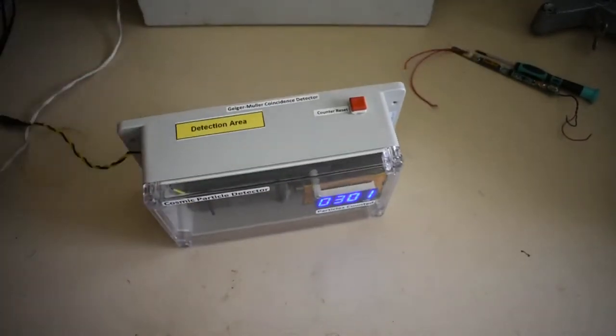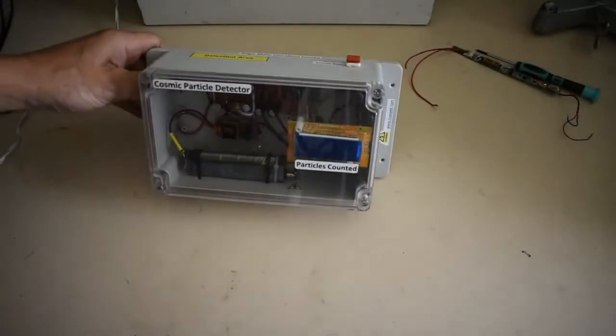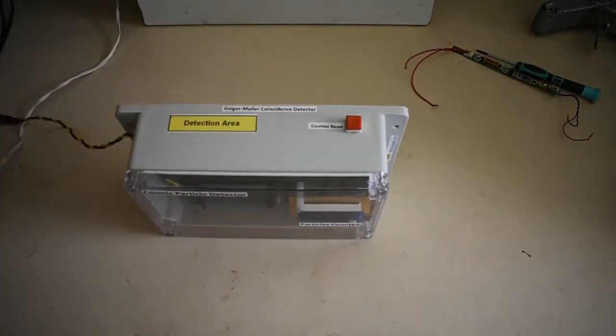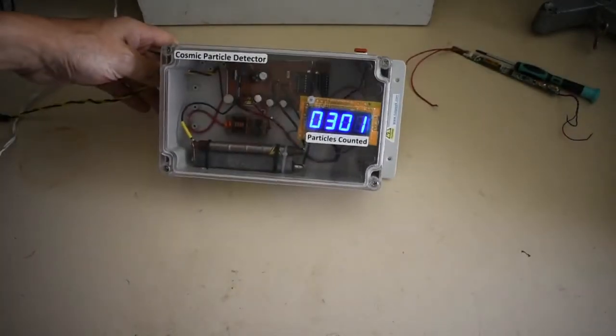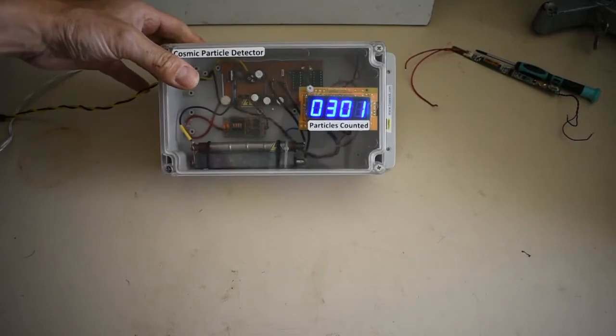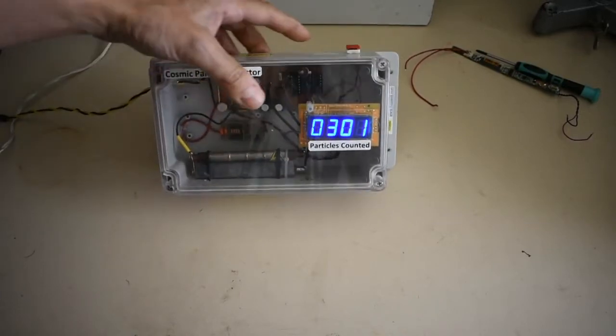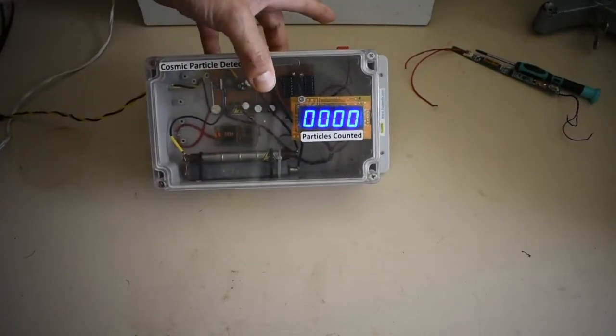A couple of advantages with this one. First of all, the memory on the counter is non-volatile, so killing the power and putting it on again keeps the settings. The only way of clearing it is to press the reset.